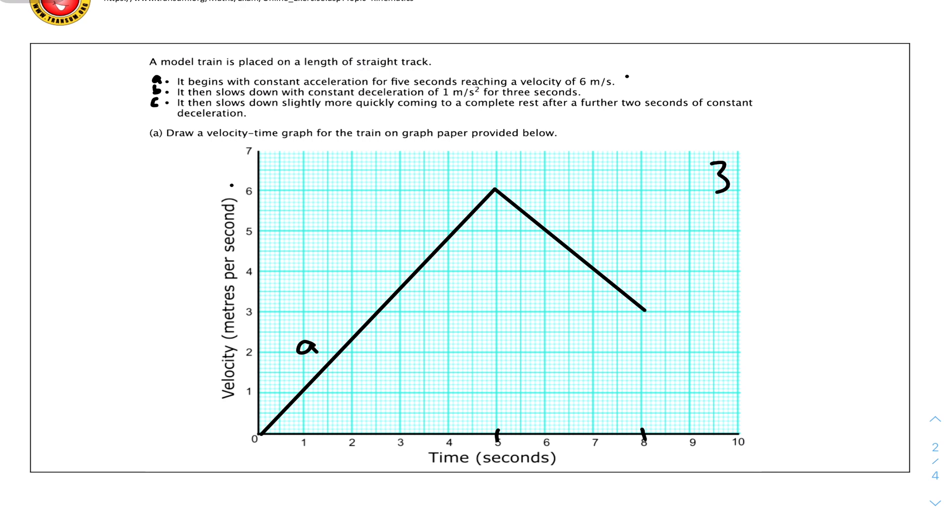We can confirm this by doing some basic equations. The final velocity is 3 minus initial velocity over time taken: (3 minus 6) over (8 minus 5) equals minus 3 over 3, which is minus 1, which is what we're given. A negative constant acceleration equals a positive constant deceleration. Take note of the difference between deceleration and acceleration. This is B. For C, it then slows down slightly more quickly and comes to complete rest after a further 2 seconds. Just connect the dots from this part to here, drawing from here to here. And that's the answer.